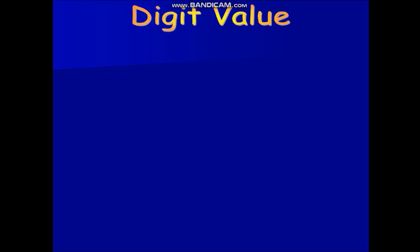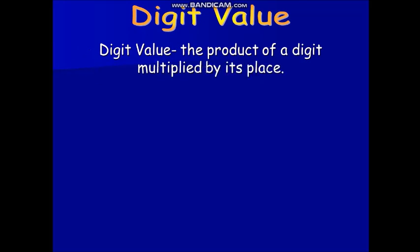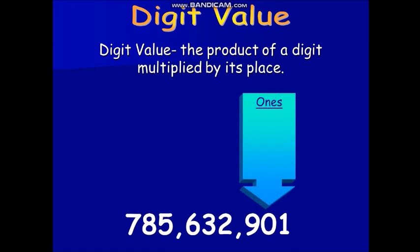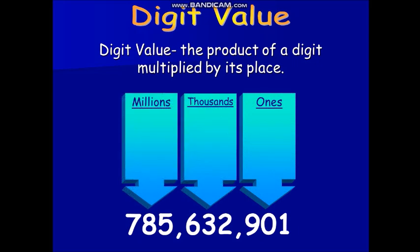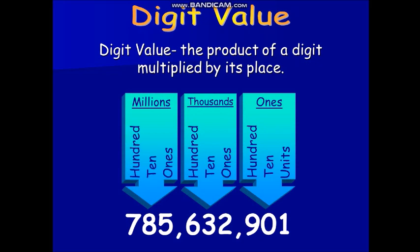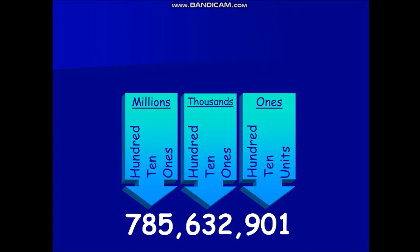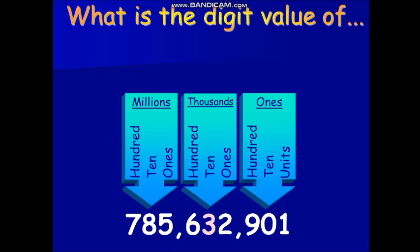Now let's move on to digit values. Digit value is the product of a digit multiplied by its place. We still have the same place values on each number. Digit value is simply knowing how much is the value of the number. Digit values should be written in numbers and not in words. For example, the digit value of the number 3 is 30,000. We just simply copy the number 3 and replace all the numbers on its right with zeros.